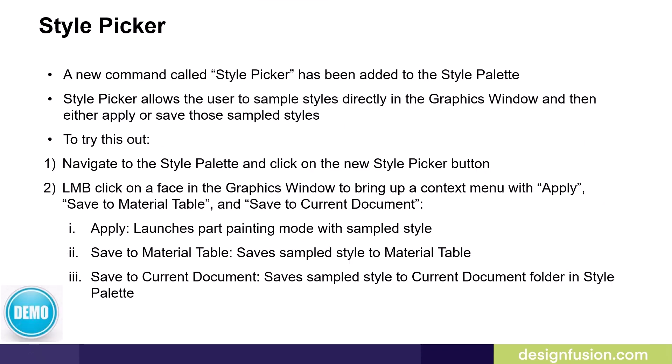A new command called Style Picker has been added to the style palette. The Style Picker allows the user to sample styles directly in the graphics window and then either apply or save those sampled styles. Navigate to the style palette and click the new Style Picker button, then left-click on a face in the graphics window to bring up a context menu. Select either Apply, Save to Material Table, or Save to Current Document. Selecting Apply launches the part painting mode with the sampled style; Save to Material Table saves the style to the material table; Save to Current Document saves it to the current document folder in the style palette.